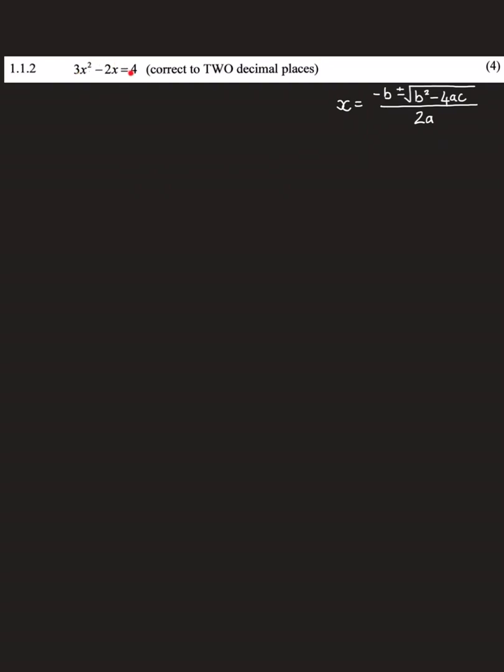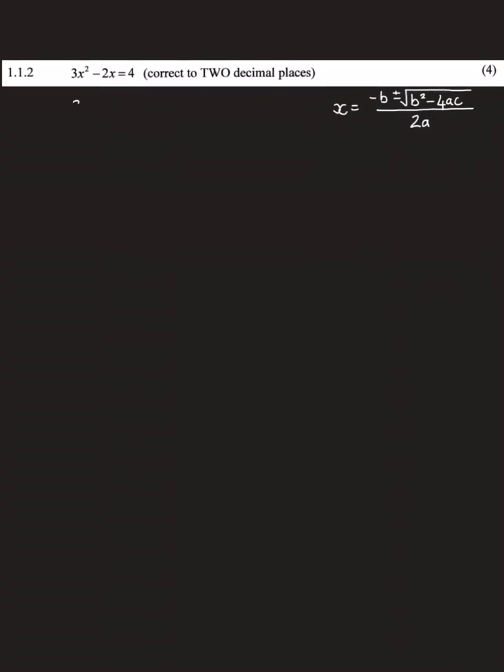The next question asks us to determine the value of x correct to two decimal places. Now that means we are going to use the quadratic formula. In order to do that we first need to arrange it into the form ax² + bx + c = 0. So that's what I'm doing right now. And just to make it obvious to everyone, I'm going to write down that a has a value of 3, b has a value of negative 2, and c has a value of negative 4. So now we substitute those into the equation where we say that b is negative 2 and it's plus or minus, there's a square root sign and we've got negative 2 squared minus 4 times by 3 times by negative 4 over 2 times by a which is 3.